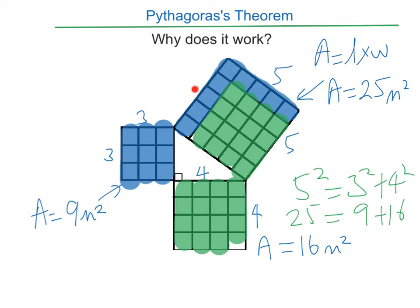So the area of this big square is equal to the area of this square plus the area of that square.